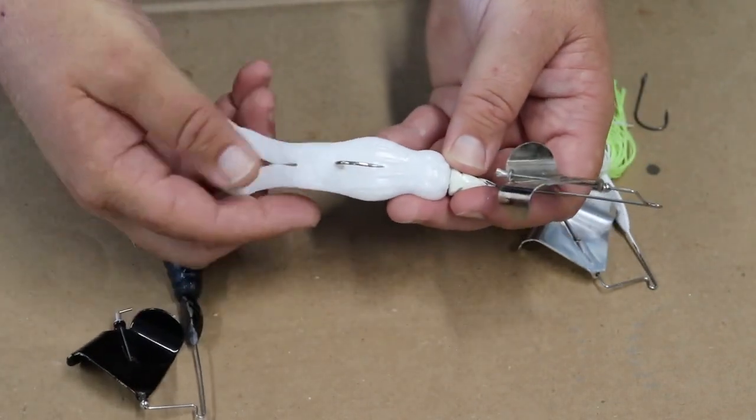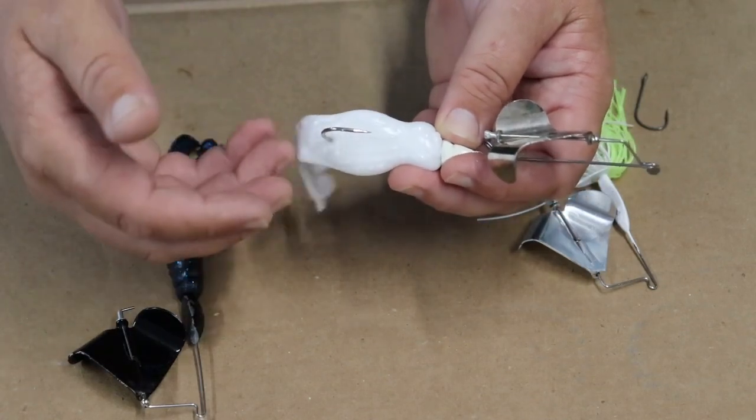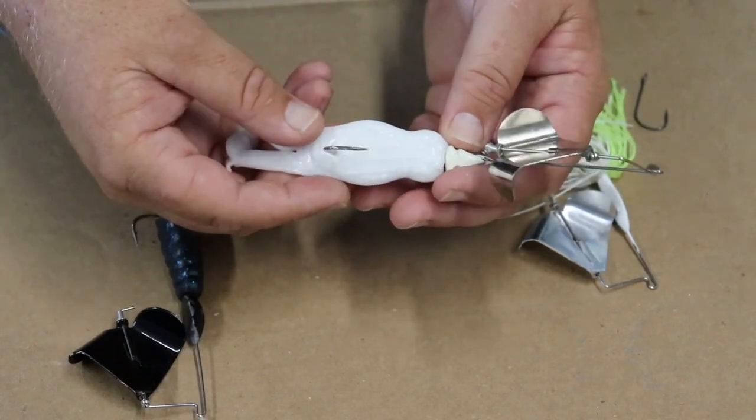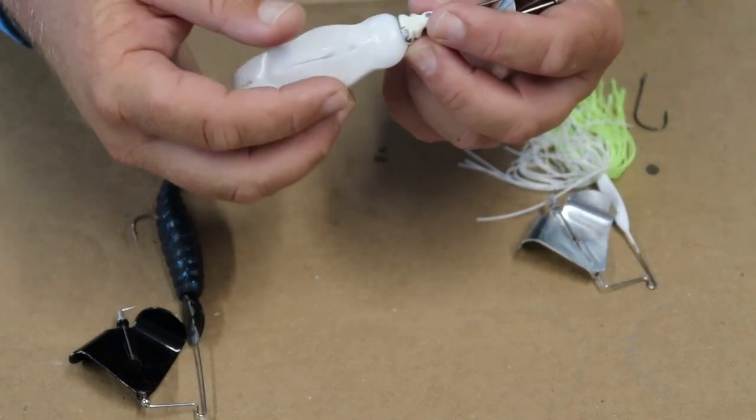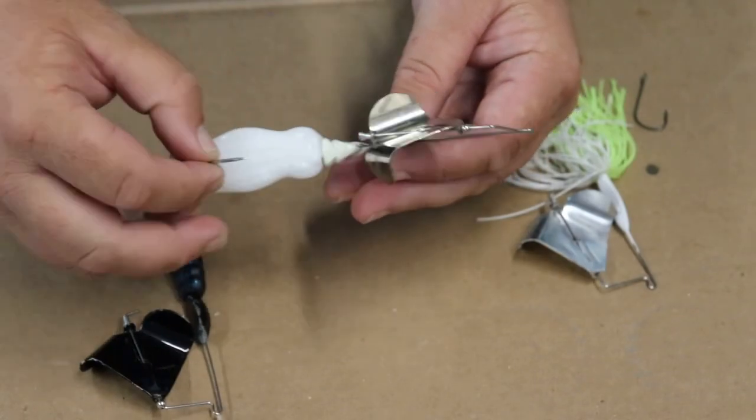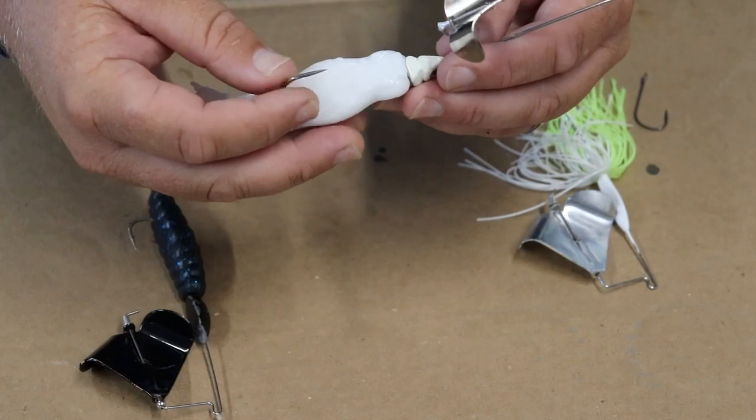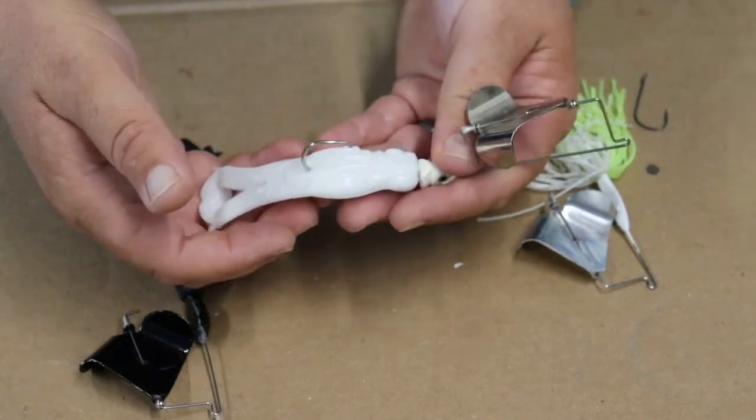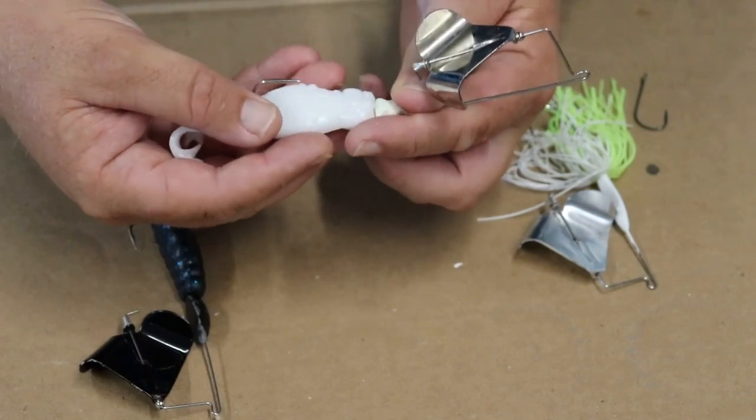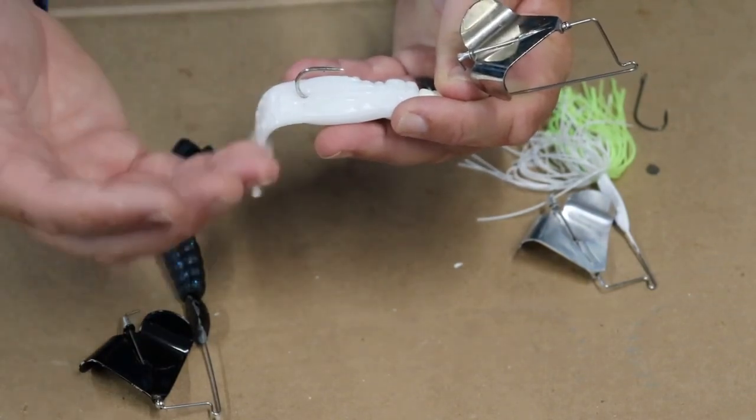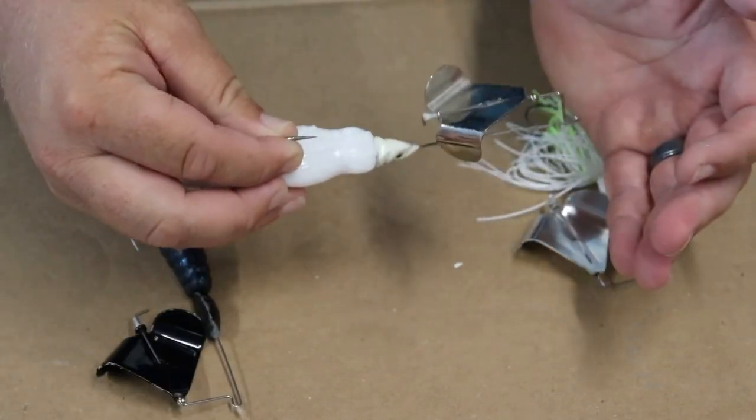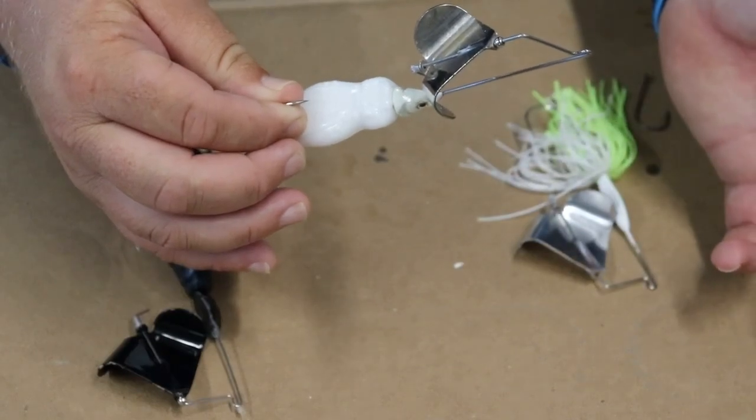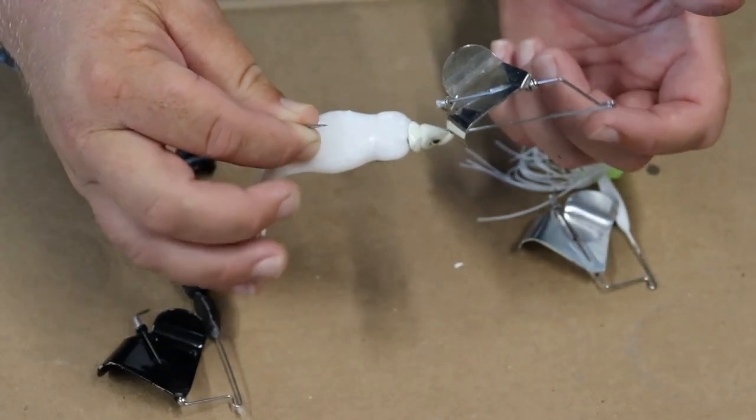The next thing that adding a toad to a buzzbait really does is it enhances the buoyancy of the bait in general. It allows the buzzbait to get to the surface a lot quicker, especially if you're using a very buoyant toad like this one that has a keel. It allows this bait to, instead of staying under the surface until it finally catches the surface, it jets up to the surface really quick and planes out very quickly. You can slow roll it a lot more too, because you've got way more bulk and it's allowing that bait to really stay on the top very easily. You don't have to reel it fast to keep the buzzbait on the surface. You can actually slow roll it a little bit better.